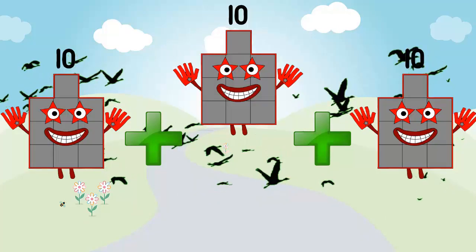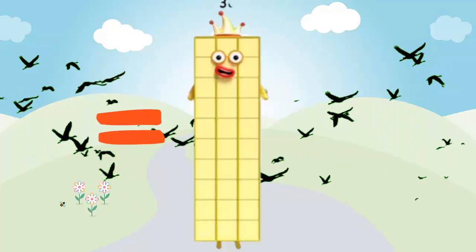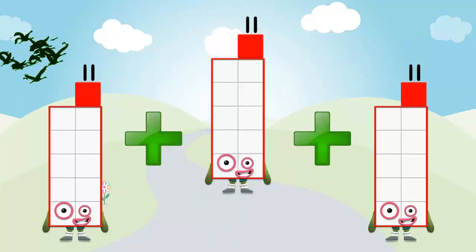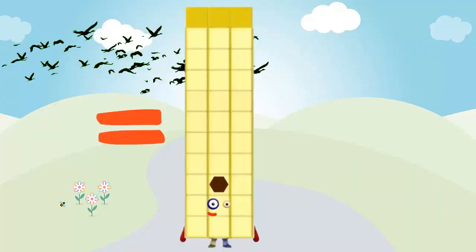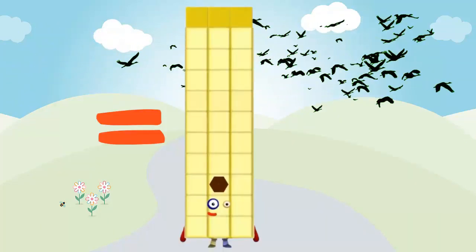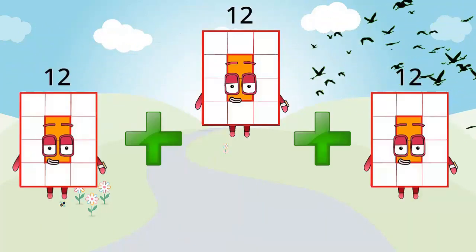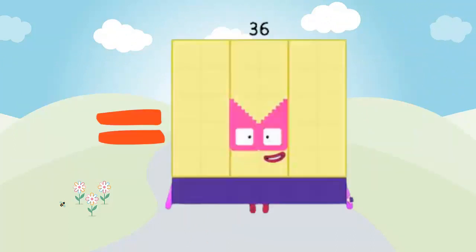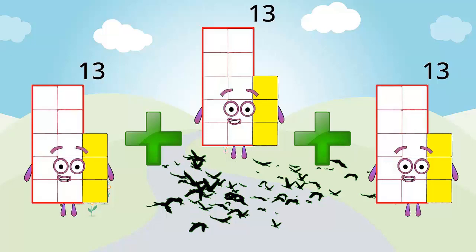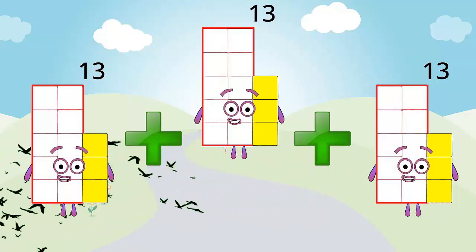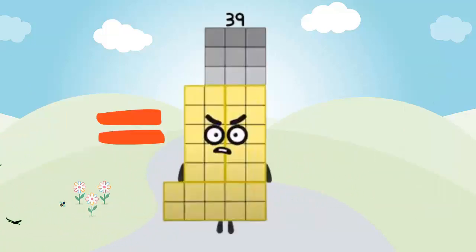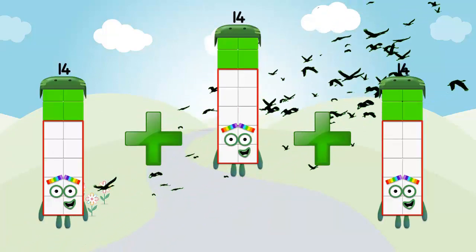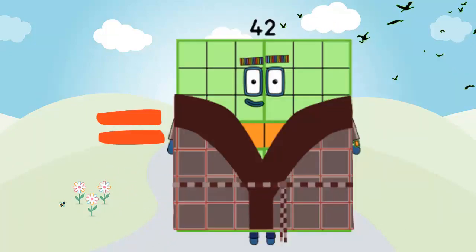10 plus 10 plus 10 equals 30. 11 plus 11 plus 11 equals 33. 12 plus 12 plus 12 equals 36. 13 plus 13 plus 13 equals 39. 14 plus 14 plus 14 equals 42.